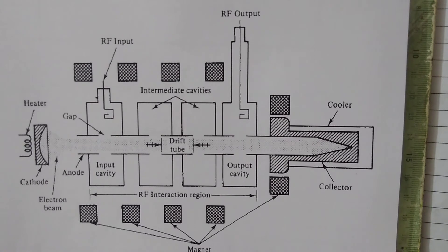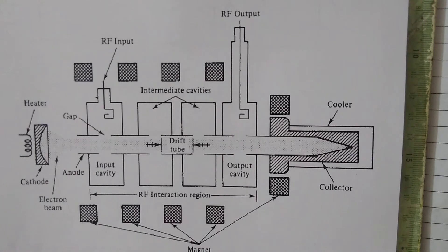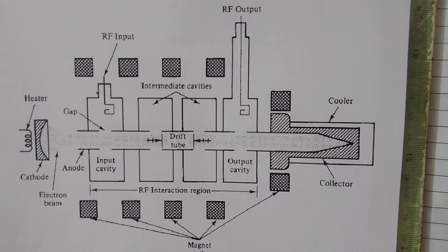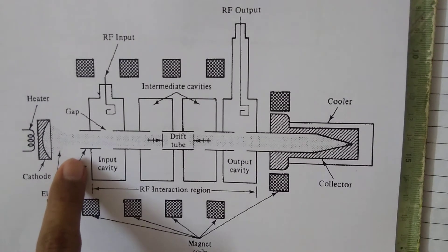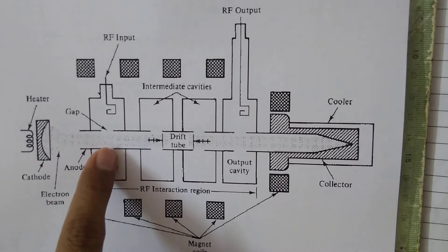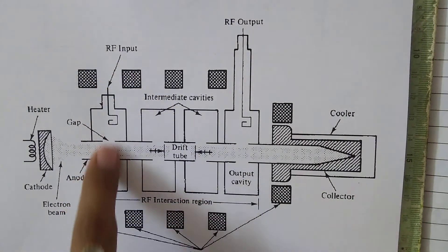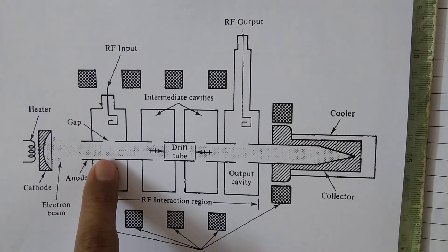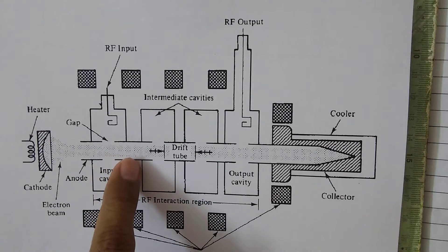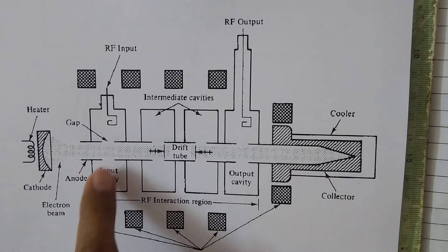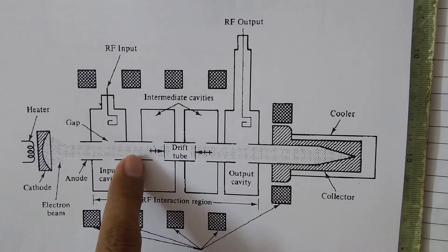This tube operates on the principle of velocity modulation. Electrons are generated from the cathode and travel with velocity v0. Once they enter the first cavity, due to the RF signal, some electrons accelerate while others decelerate. As a result, when they exit the buncher cavity, a bunch of electrons is formed.